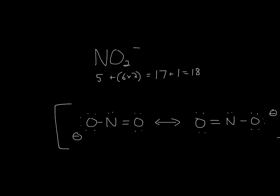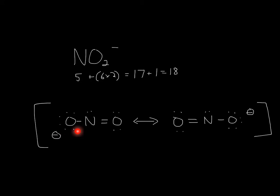So when I do that, when I make this lone pair into a double bond, and this double bond into a lone pair, we end up getting a negative charge on this oxygen, and a formal charge of zero on both of these.